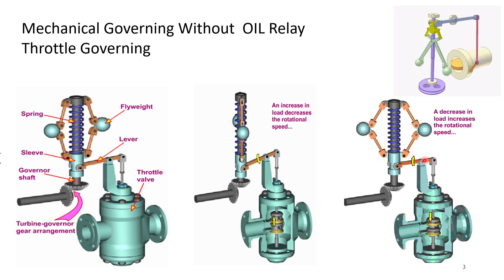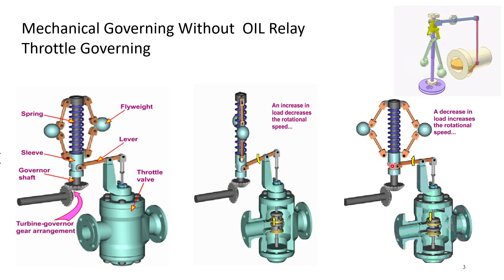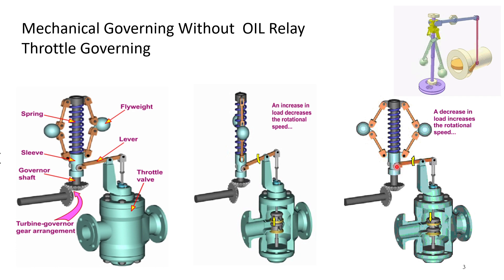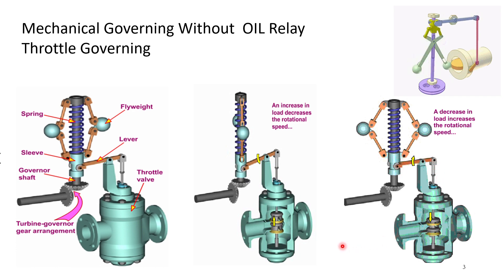When there is a load decrease in the turbine, the turbine speed will go up. This fly valve weight will move out. This sleeve will go up and it will start closing the valve up to the extent required.